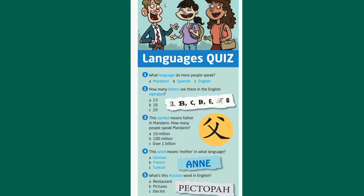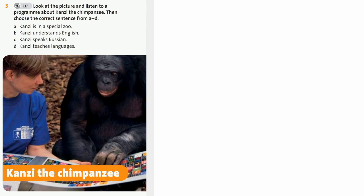What about this one? This word means 'mother' in what language? Mehmet: I know. My parents are from Turkey and it's Turkish. Yes, that's right. And finally, what's this Russian word in English? Sophie: I don't know. Is it 'restaurant'? Yes, it is. Well done, Sophie. It means restaurant.